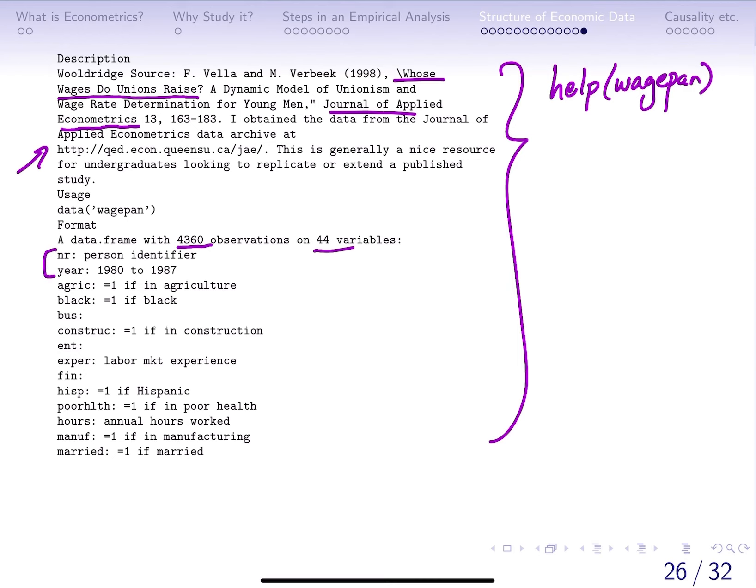A panel data set has two identifiers. Any variable y will have two components: i represents the cross-sectional unit, so there should be some kind of unique identifier for that unit, and t denotes the value of that variable for cross-sectional unit i at time t.